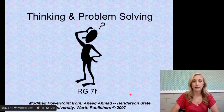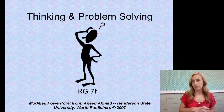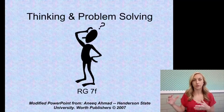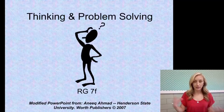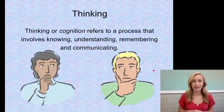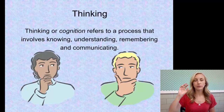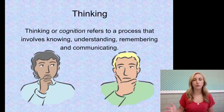We're moving on to thinking and problem solving. Unit 7 is on cognition, which is all about thinking. We've talked about memory and forgetting, so let's move forward to cognition itself — thinking — which then leads to problem solving. Thinking, or cognition, refers to a process that involves knowing, understanding, remembering, and communicating. We're not talking about the cognitive perspective specifically here, just cognition in general and the process of thinking.